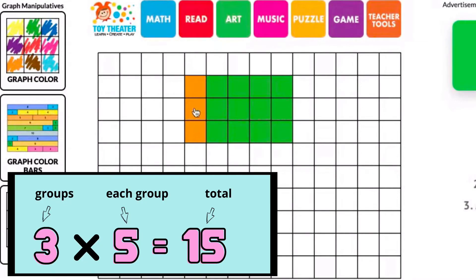And for multiplying, it's 3 times 5 equals 15. Again, 3 groups, 5 in each, total is 15.